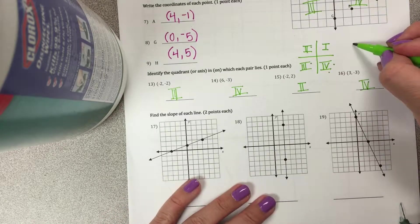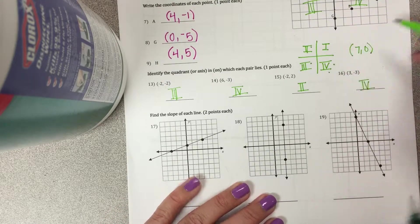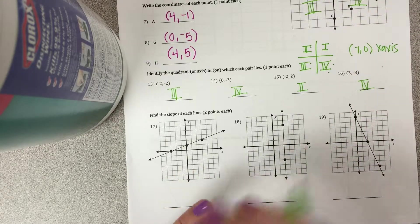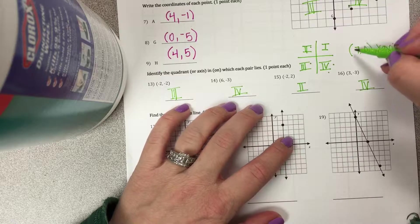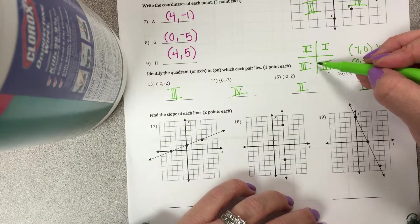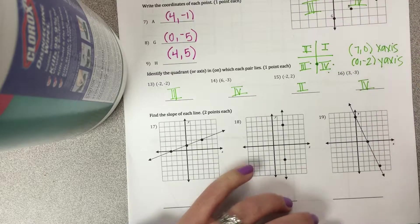And if you'd had a point like 7, 0, so you would be going over 7, up 0, that would be sitting on the X-axis. The Y-axis would be if it was something like 0, negative 2. So over 0, down negative 2, you're sitting on that axis. So Y-axis.